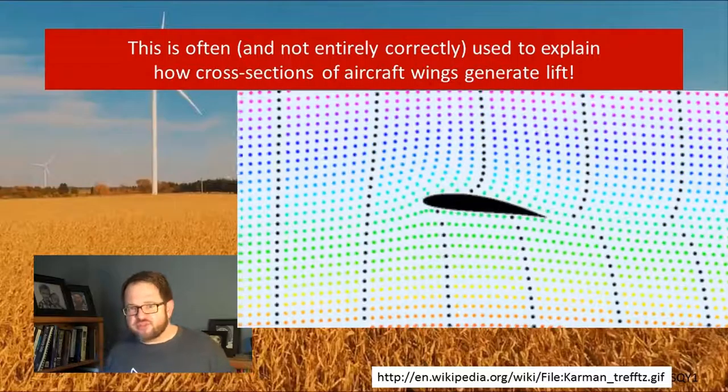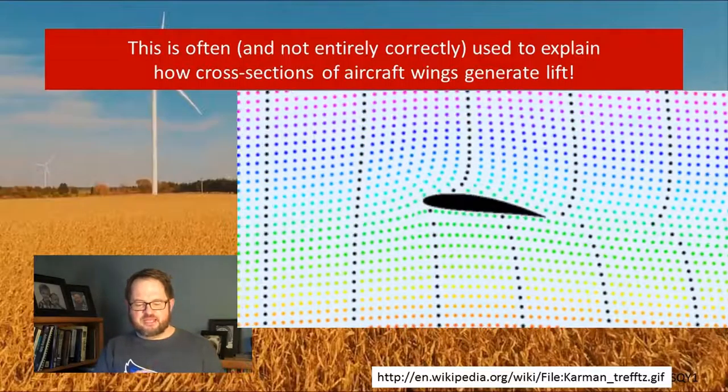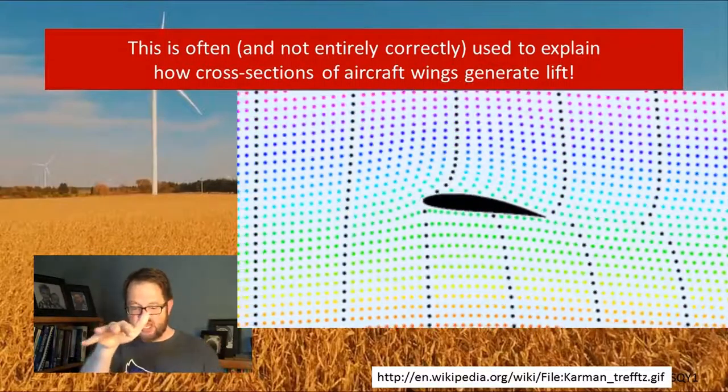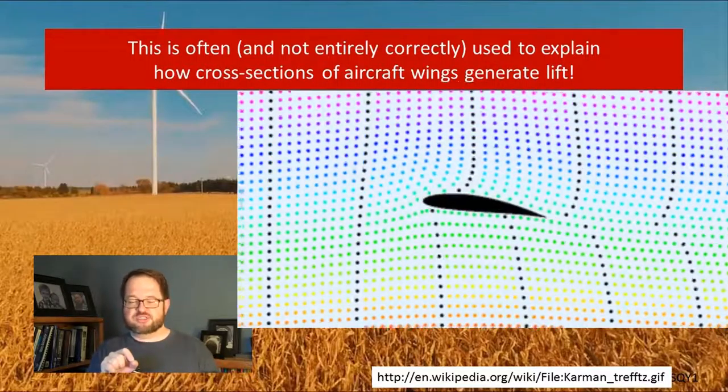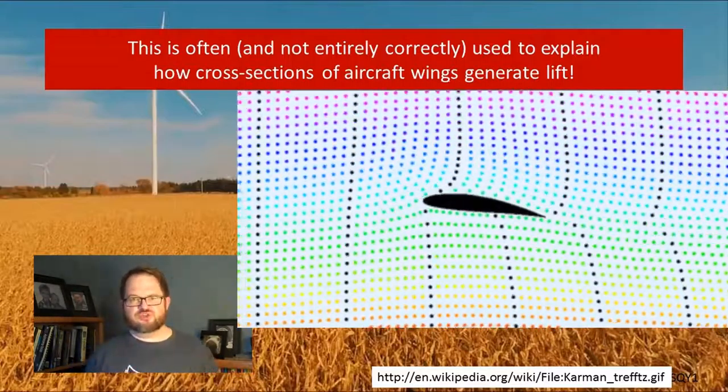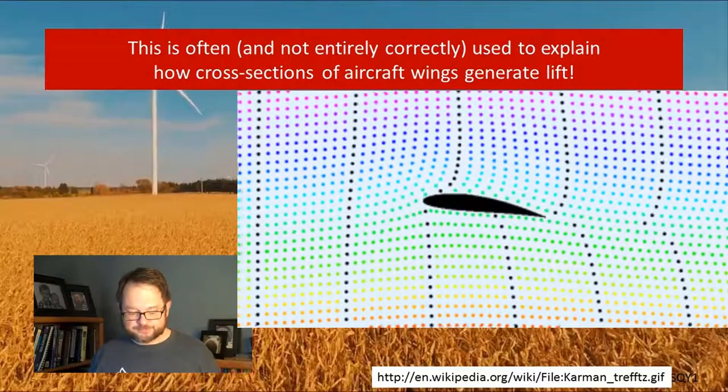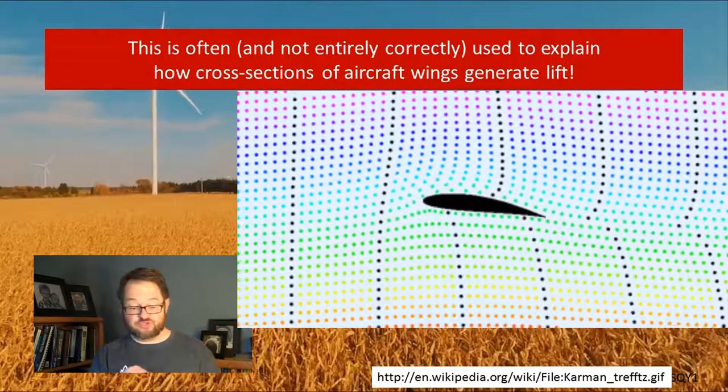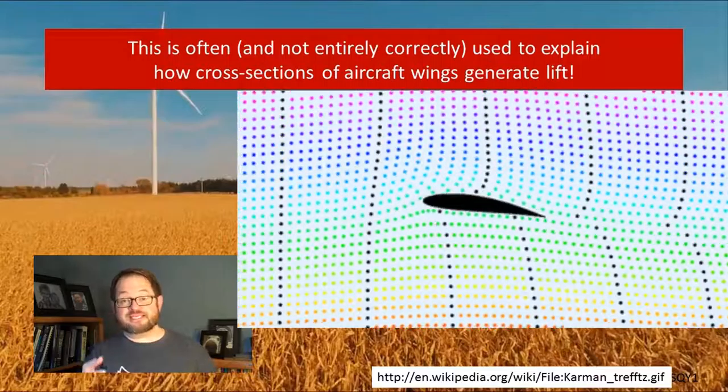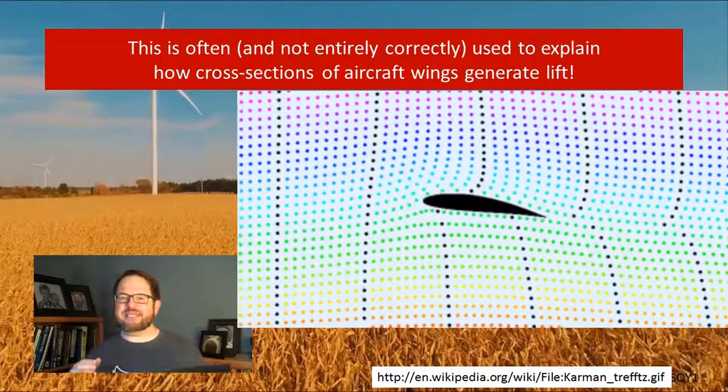Now this is often, and not altogether correctly, used to explain how aircraft cross-sections or wings work. That little black shape there is supposed to be the cross-section of a wing of an aircraft. You're looking at the wing from the edge and you can see the air parcels, those little dots, flowing over the wing. What your high school science teacher tells you is that the wind flows faster over the top of the wing than over the bottom of the wing. And you can kind of see that if you watch individual air parcels moving over that wing there. Therefore, by Bernoulli's equation, the pressure on the bottom of the wing is higher than the pressure on the top of the wing, and that creates a force that is pushing upward on the wing. And that's kind of true.